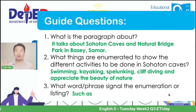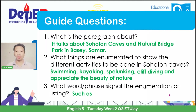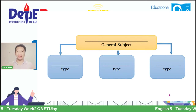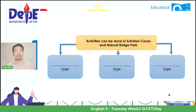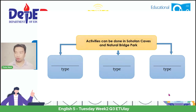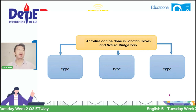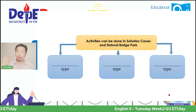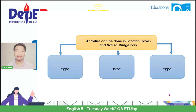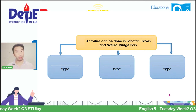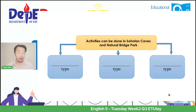Since we already have a guide, we move on to our graphic organizer. We are asked about the general subject and what the types are. So what is the subject? It is all about the Sohotan Caves and Natural Bridge Park—the same graphic organizer used in your self-learning module, so you can copy these answers. But while copying, please digest and understand the concept. The topic is about the Sohotan Caves and Natural Bridge Park found in Samar.